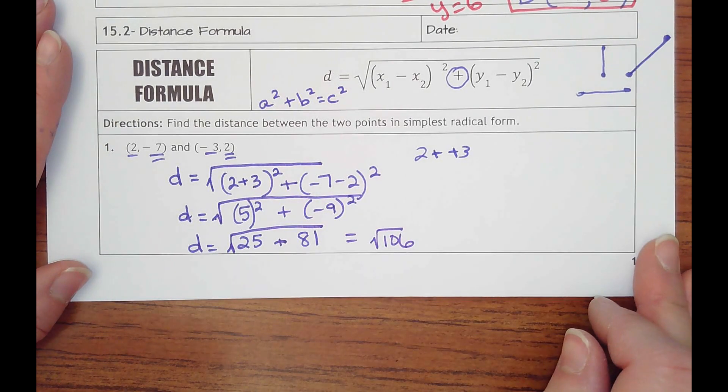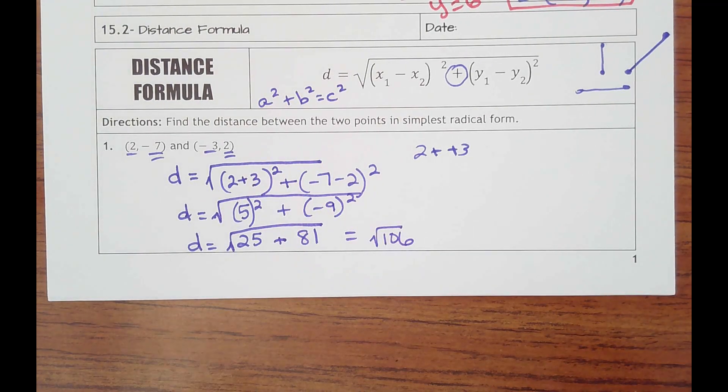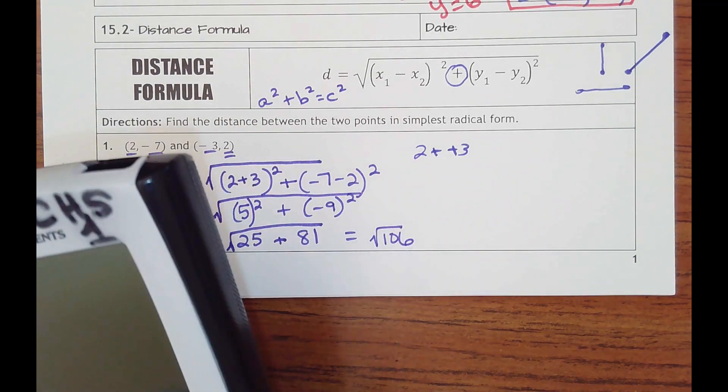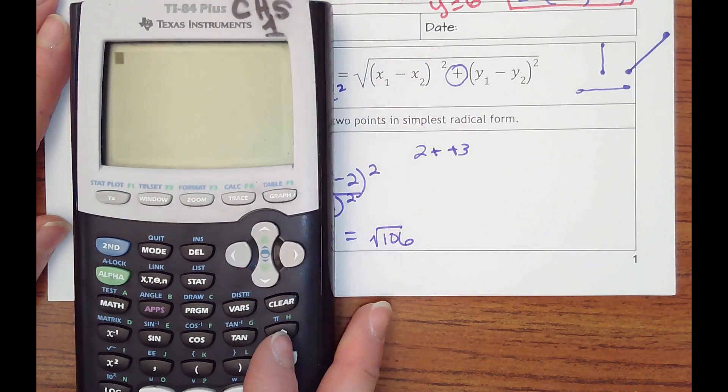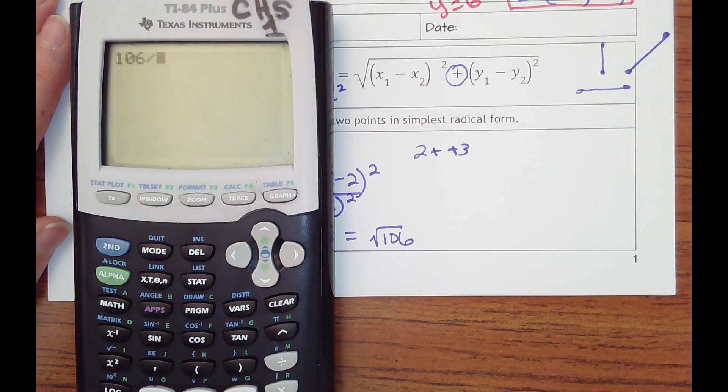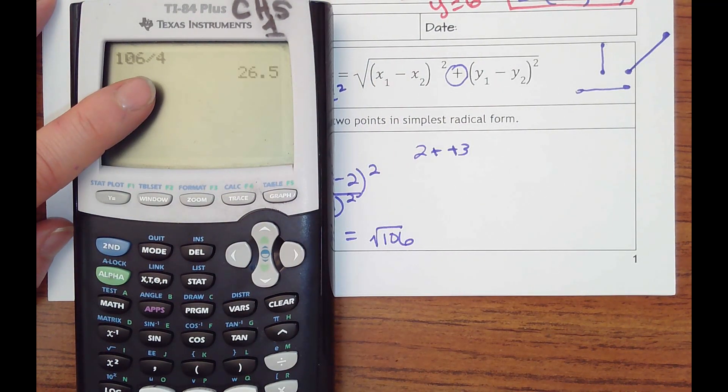And it says in simplest radical form. So now the question is, is there a perfect square inside 106? I would try dividing by 4, but I don't think that's going to work because 4 times 25 would be 100. Nope.